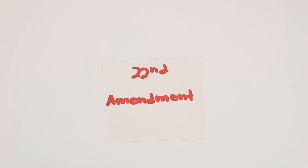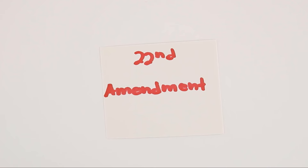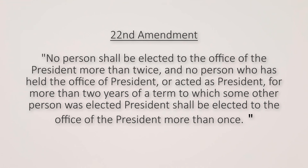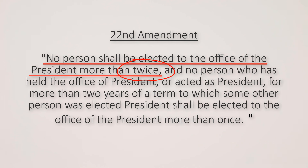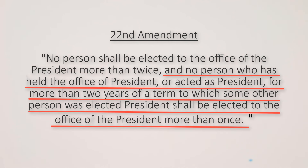The 22nd Amendment goes over the presidential term limits. A president may serve no more than two terms. And if someone like a vice president took over more than two years of a president's term, they may only run for one additional term.